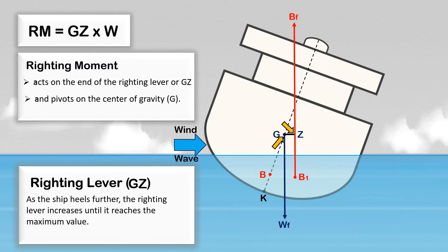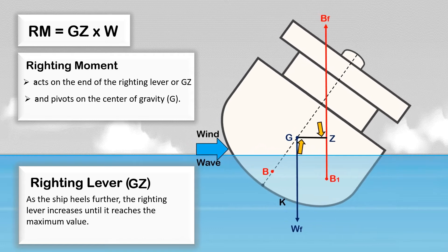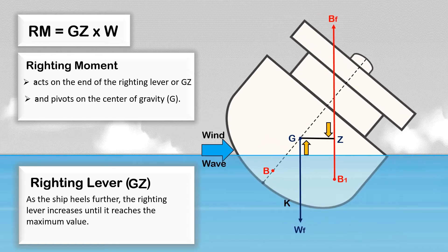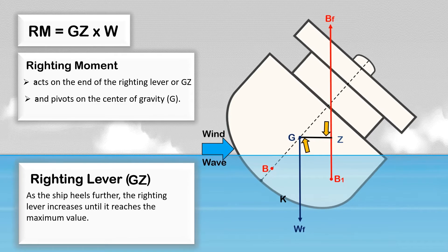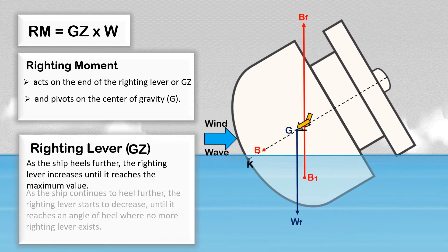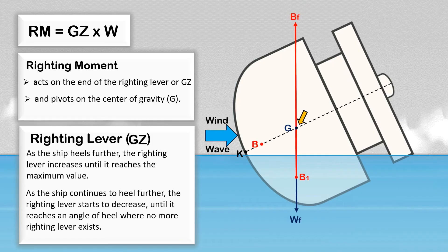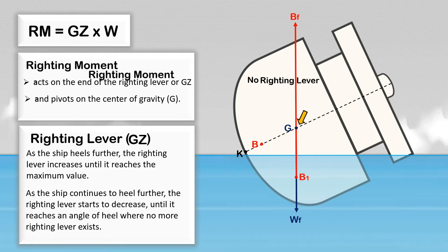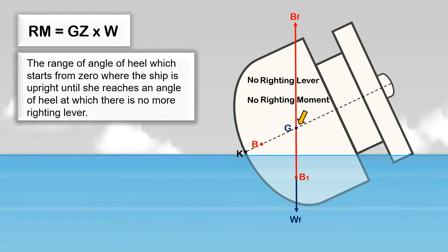As the ship heels further, the righting lever increases until it reaches its maximum value. As the ship continues to heel further, the righting lever starts to decrease until it reaches an angle of heel where no more righting lever exists. At this point, if the external forces are removed, she will remain in this condition since no righting lever exists and no righting moment will bring her back to an upright position. The range of angles of heel from zero — where the ship is upright — until she reaches the angle where there is no more righting lever is what we call the range of stability.